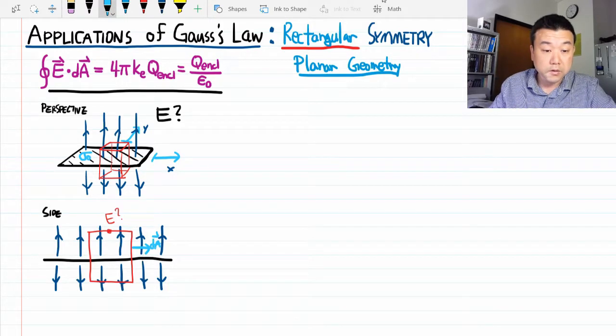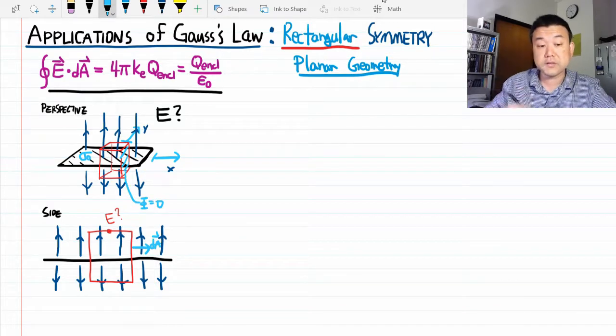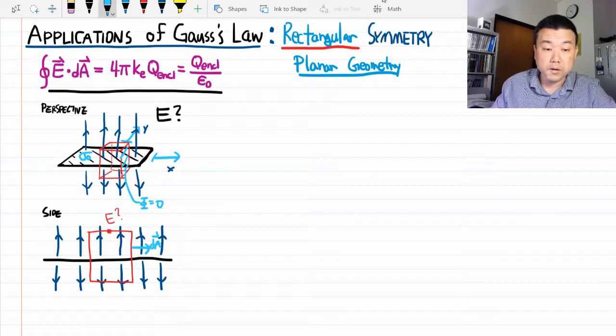So the flux through the side surface here will be zero. And true of all the other side surfaces. You are only really looking at flux of the surfaces at the top and bottom.